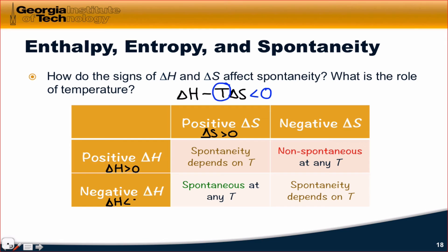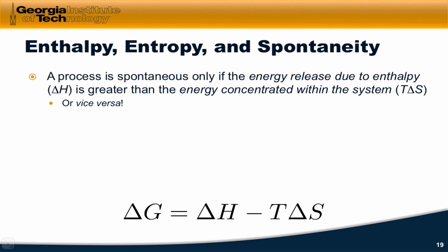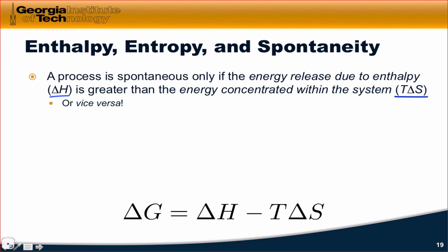Similarly, if we have a negative delta H and a negative delta S, spontaneity depends on temperature. Delta H is favorable — enthalpy is released and the enthalpy change is less than zero — but minus T delta S is unfavorable, being a positive term since delta S is negative. However, provided the temperature is low enough, delta G may still be less than zero, as long as the positive T delta S term does not overwhelm the negative enthalpy term.